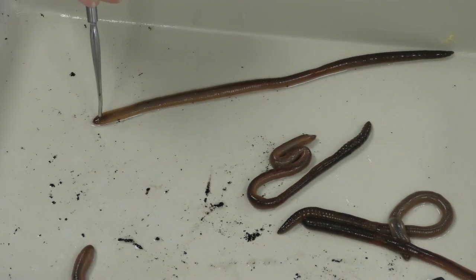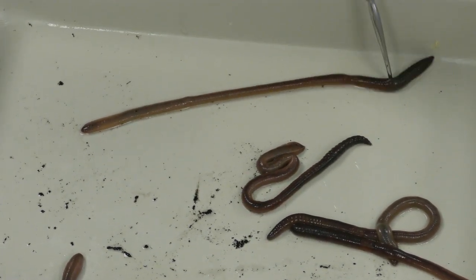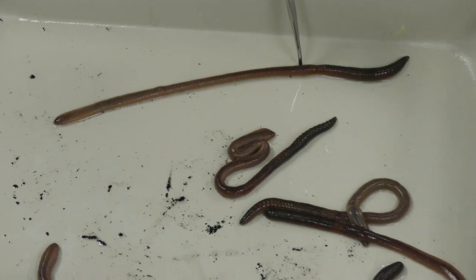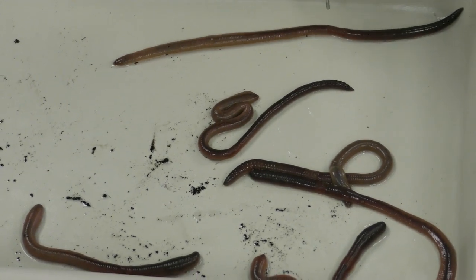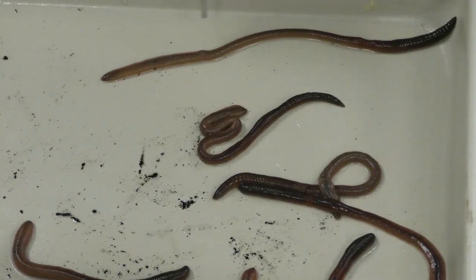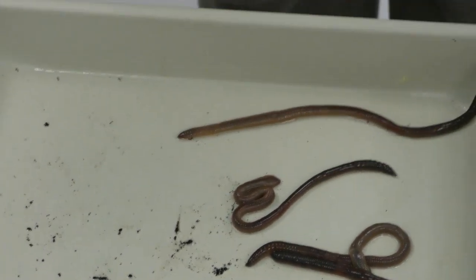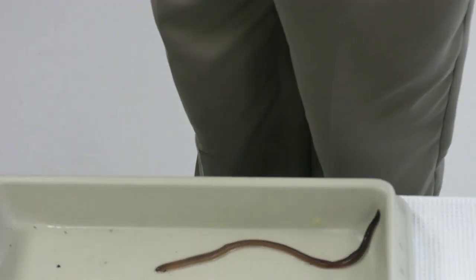So with that said, when the worm is contracting its circular muscles and moving it across the surface, the setae are up, allowing it to glide across the surface. And they're down to hold the worm fast to the surface, so the longitudinal muscles have something to pull against. They're pulling the body up against that.